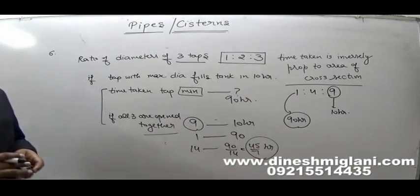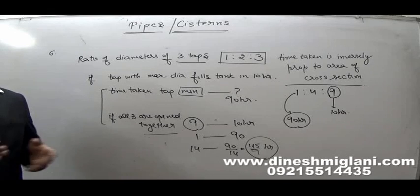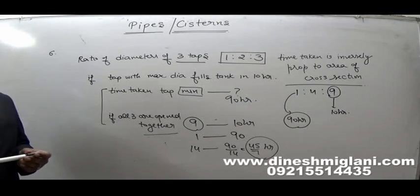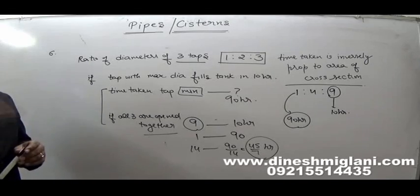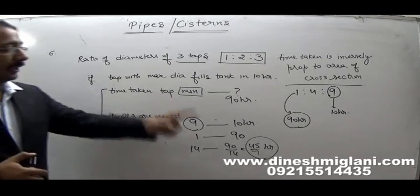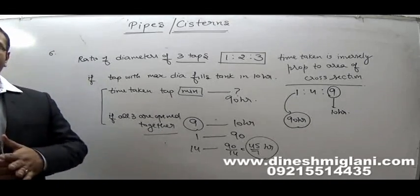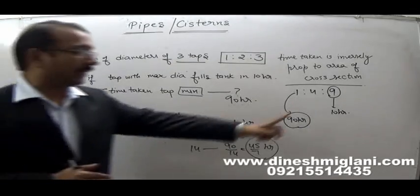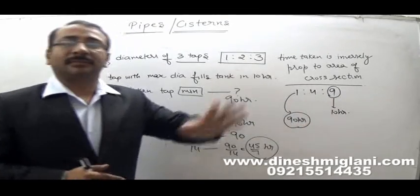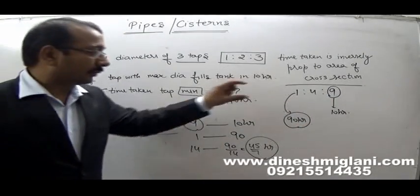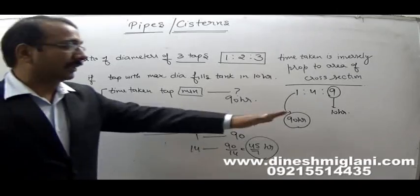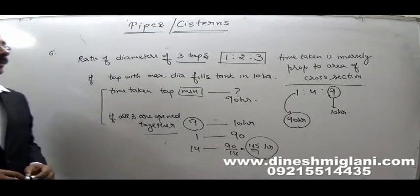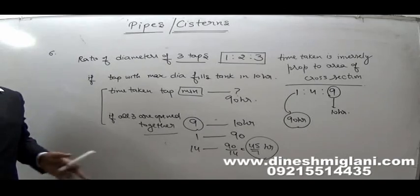So in any question where the ratio of radius or diameter is given, first take the ratio of the area of cross section, then compare and answer. The maximum cross section area corresponds to the smallest time taken, and if cross section area is less, the time taken is more — because time taken is inversely proportional to area of cross section.